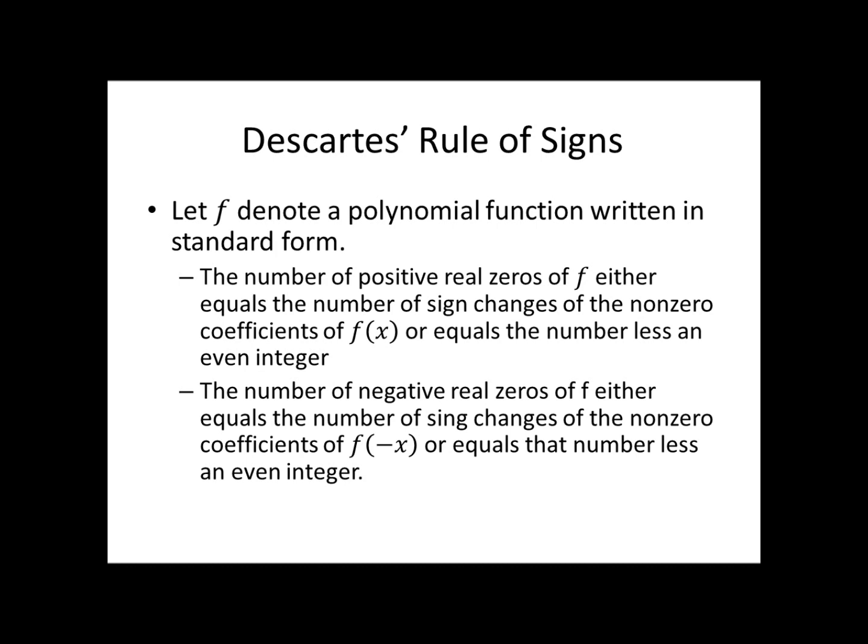The number of positive real zeros of f either equals the number of sign changes of the non-zero coefficients of f(x), or it equals that number less an even integer. So we count the sign changes in the polynomial and that tells us how many positive zeros there are. For negative zeros: the number of negative real zeros either equals the number of sign changes of the non-zero coefficients of f(-x) — that is, you plug negative x into the function — or it equals that number less an even integer.